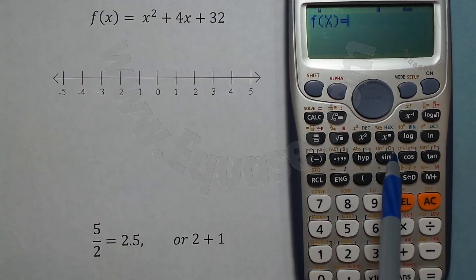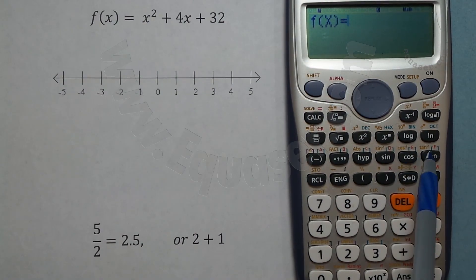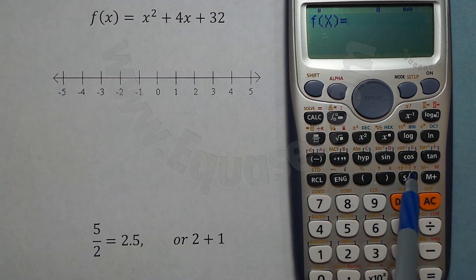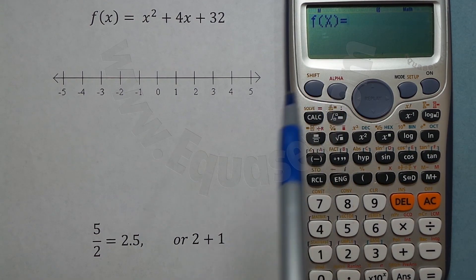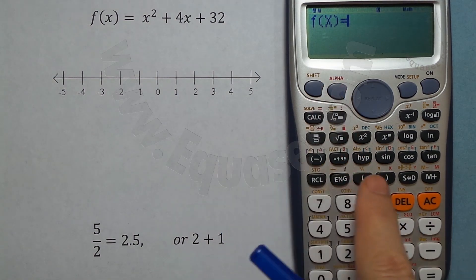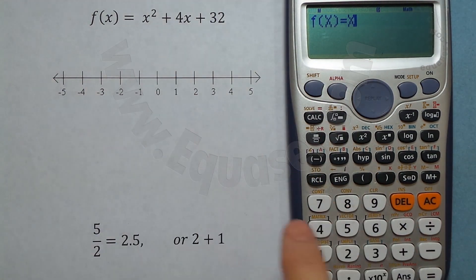Red values can be accessed by pressing alpha, or this red button. So I press alpha and x, and then square to square that, and then plus 4x.